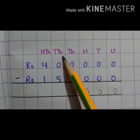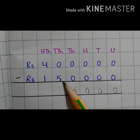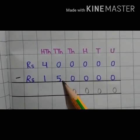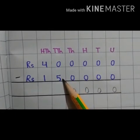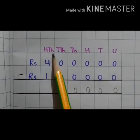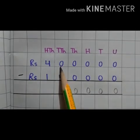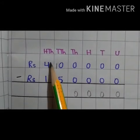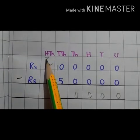Now move to the ten thousand place. Ten thousand place we have 0 and 5. 0 minus 5 we cannot subtract because 0 is a lesser value and 5 is a greater value. So we move to the 100 thousand place. 100 thousand place we have 4. So 4 minus 1 is equal to 3. So we have 3.